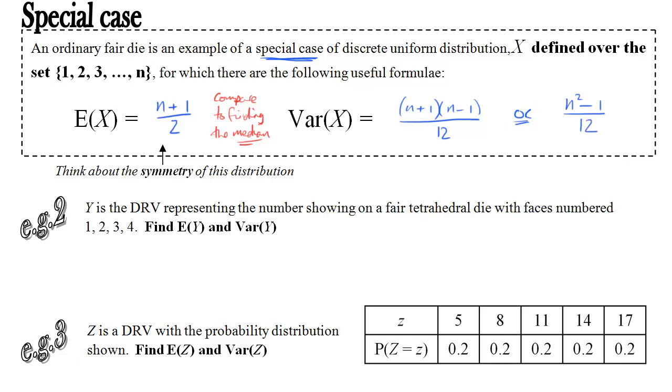So let's go ahead and use those two formulae in an example. Here we have a tetrahedral die. So four sides, equally likely because it's a fair die, and four different numbers. Therefore it does fit this special case because they're consecutive numbers 1, 2, 3, 4. So using n equals 4, we can just use the formula for the expected value of y, n plus 1 over 2. So 4 plus 1 over 2 is 2.5.